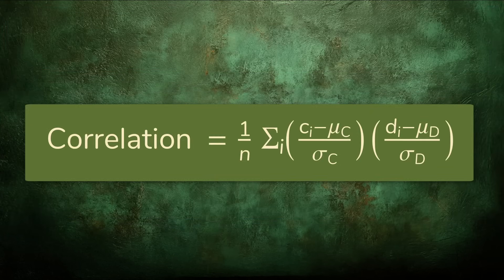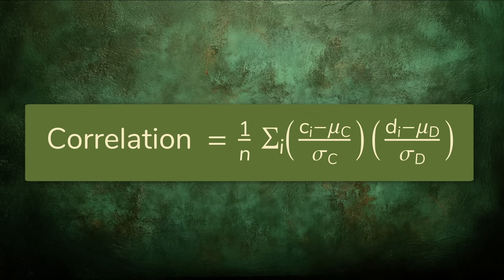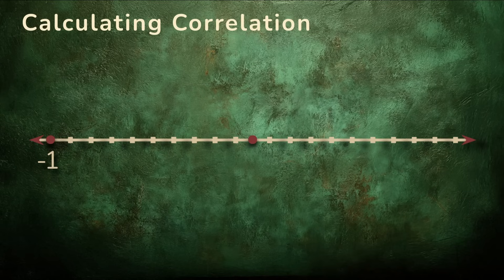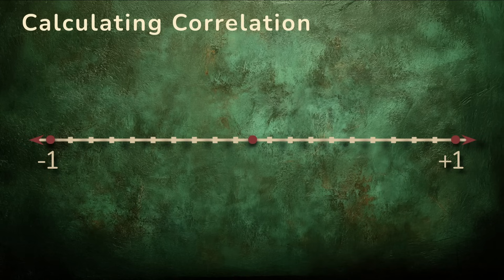To finish the calculation, we take the average of these products. This is the general formula for the correlation between two sequences of numbers. The correlation is always a number between negative 1 and 1. But how do you interpret the result?